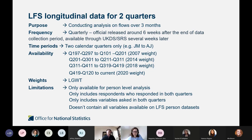These longitudinal datasets don't include every variable available on the LFS person datasets — they contain around 500 variables, focused mainly around labour market requirements for flow estimates, compared to over 1,000 on the LFS person datasets.